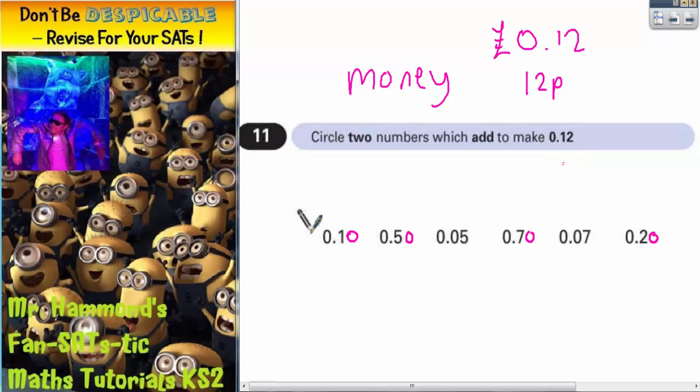Which two of them are going to make 12 pence, or 0.12 pounds? 70 pence is out, so there's only three left: 10 pence, 5 pence and 7 pence. Well clearly if you choose 10 pence you would need 2 pence to make 12 pence, and there isn't a 2 pence, so 10 pence is out.